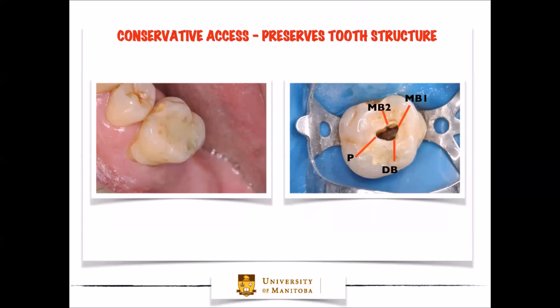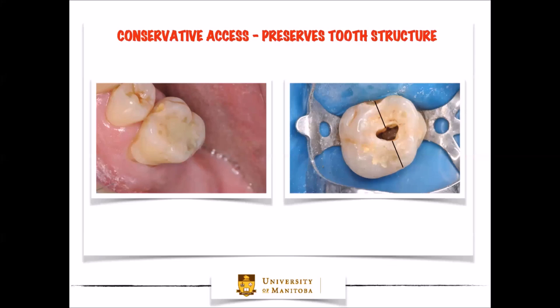It's also very important when trying to find the second mesobuccal canal to do a very conservative access. We should not decrease the tooth strength by removing a lot of tooth structure when trying to find that second mesobuccal canal. When we look at this picture, we can again see all four canals; however, the access opening is very conservative. Both the mesial and distal walls are still conserved after the access, and this is going to give us longevity — this is what's going to allow us to keep the tooth in the mouth for a longer period of time.